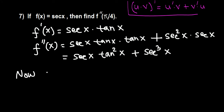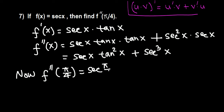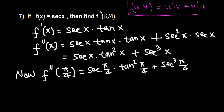Now we need to evaluate the second derivative at pi over 4. We replace x by pi over 4: secant(π/4) times tangent squared(π/4) plus secant cubed(π/4).